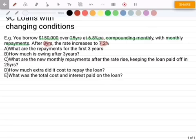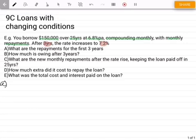First thing we're going to look at is what the repayments are for the first 3 years. So part A, for the first 3 years, we want to find a payment. So in your financial solver, open that up, we want to find that. Therefore, we've got an N value of 25 times 12, or 300.